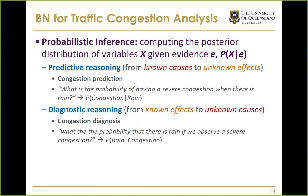Once the Bayesian network model is built, we can go back to our original probabilistic queries. We can do two different types of inference. The first is predictive reasoning: understanding the relationship from known causes to unknown effects, which can be considered conditional prediction.